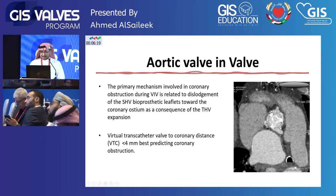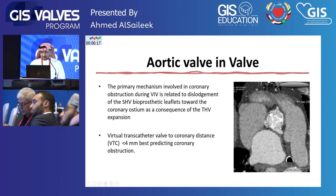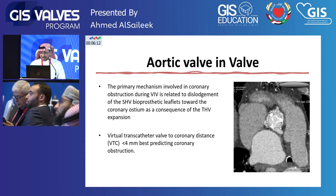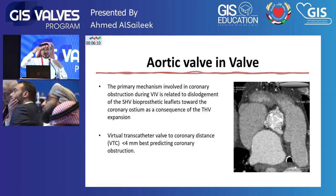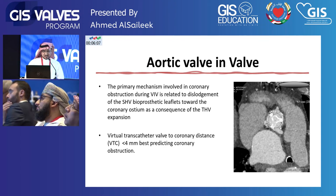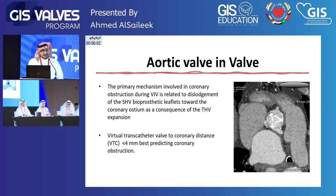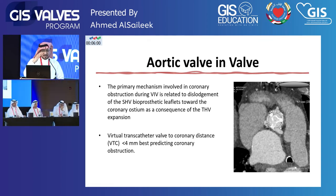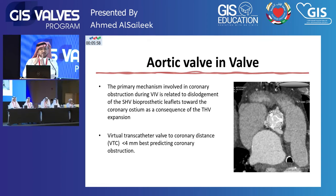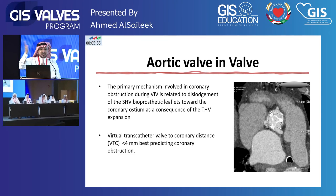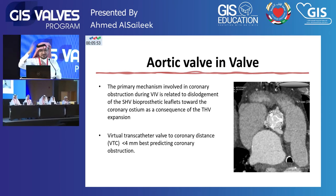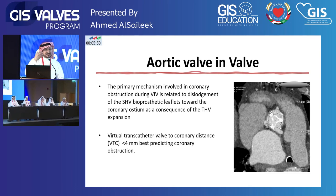This is more important in valve-in-valve procedures, because there is already a valve present and the existing leaflets might obstruct the coronary — either at a sub-coronary or coronary level. We create a virtual ring at the level of the valve leaflet and measure the distance between the prosthetic valve, which has degenerated, and the coronaries. Any distance less than 4 mm increases the risk of coronary obstruction, because the new TAVR valve will push the previous leaflet toward the coronary.